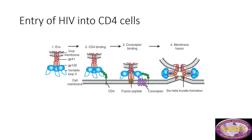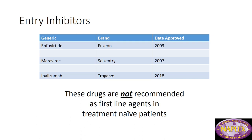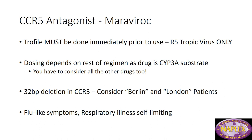Now for the entry inhibitors. None of these drugs are indicated as first-line therapy in treatment-naive patients. The first is the CCR5 antagonist maraviroc. A TROFILE assay must be done immediately prior to use to determine whether the virus uses the R5-tropic or X4 co-receptor pathway. Most newly diagnosed patients have R5-tropic virus, so maraviroc can block viral entry. However, as the virus ages and becomes treatment-experienced, it may shift to X4-tropic, at which point maraviroc has no effect on viral entry.